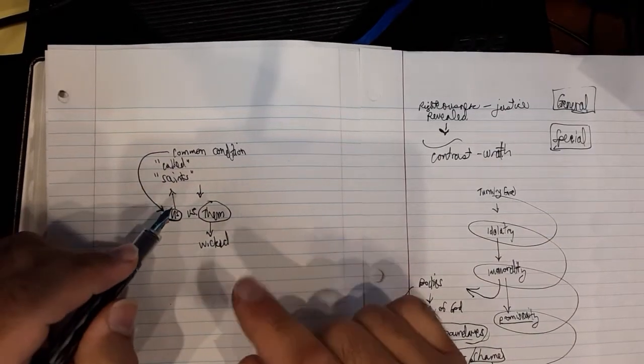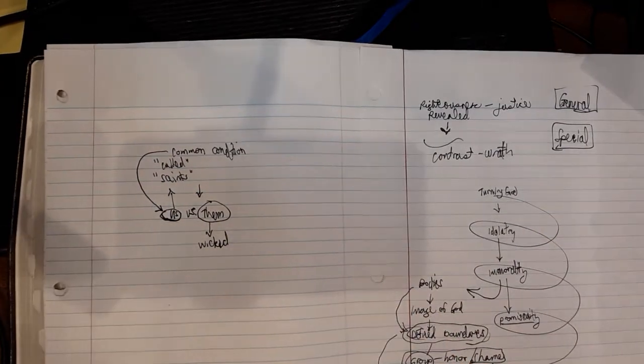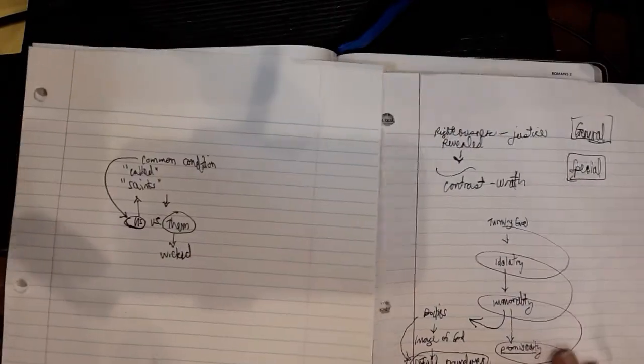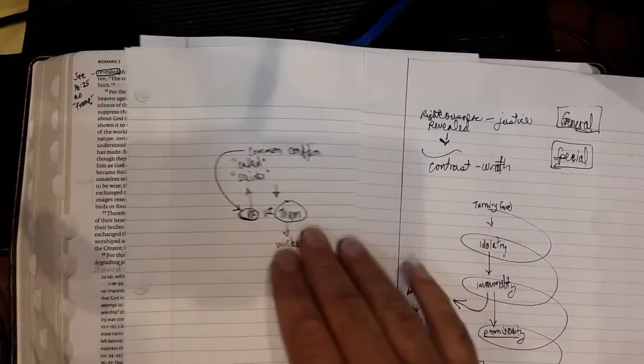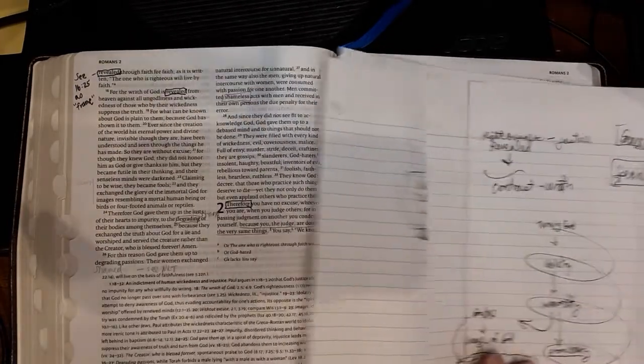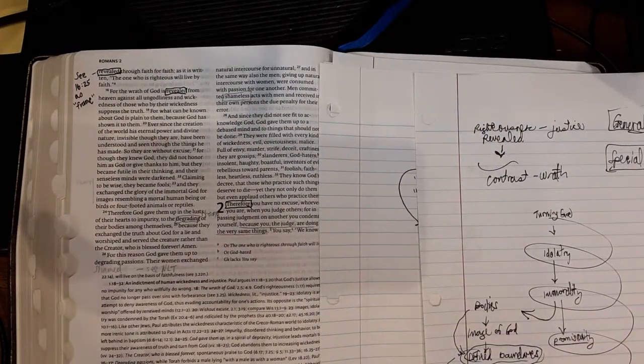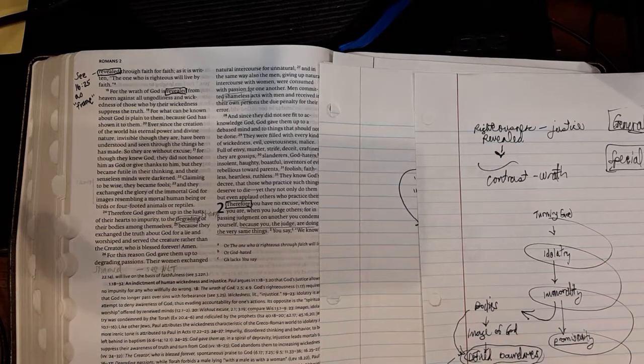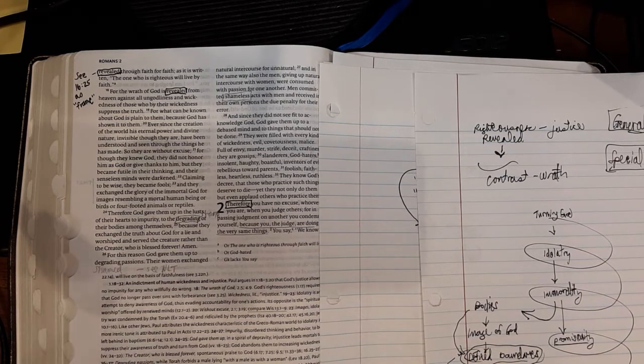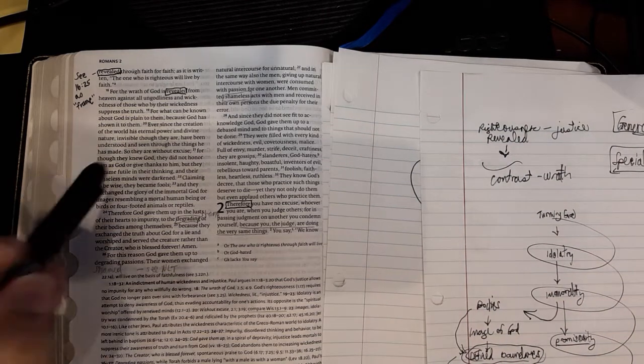But he's going to do something very sneaky in chapter 2. And I want you to wait on the edge of your seat until we get there to understand how he's going to bring these two factions together by pointing to their common condition. But for right now, he's using us versus them language. So let's read it.